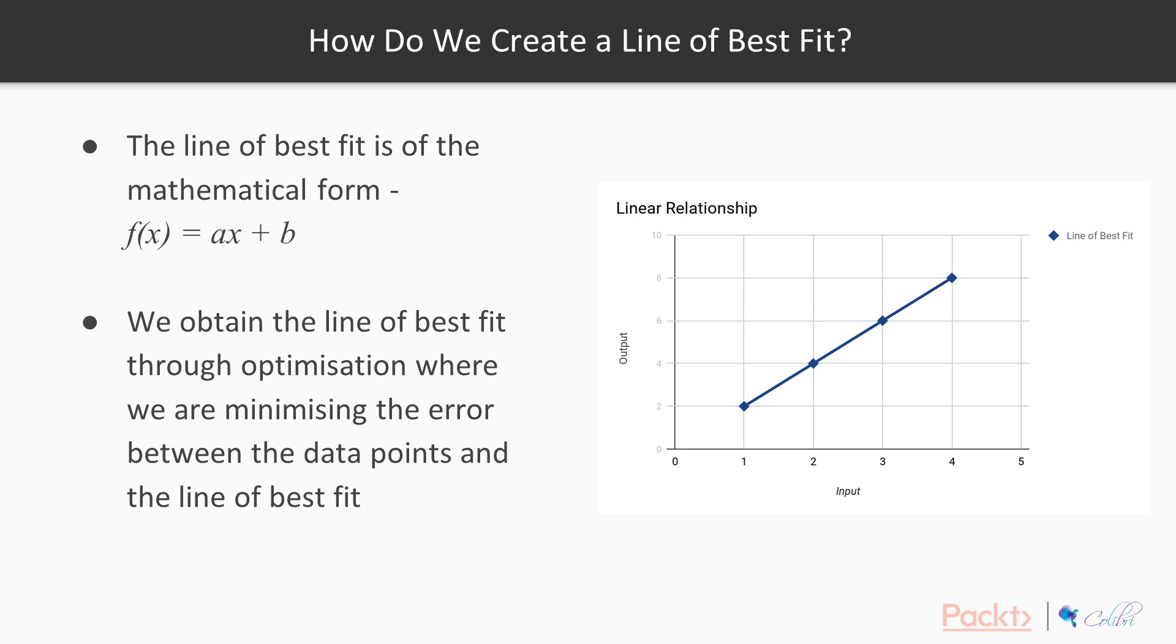So how do we create the line of best fit? Well, obviously it's in the mathematical function ax plus b, where x is your input and a and b are your coefficients. And how we obtain the relationship is a similar way to how you would fit a line of best fit at school with a ruler. You try and draw a line that minimises the distance between the line and all the points, so you fit a line that's closest to all the points. And effectively that's what we do here.